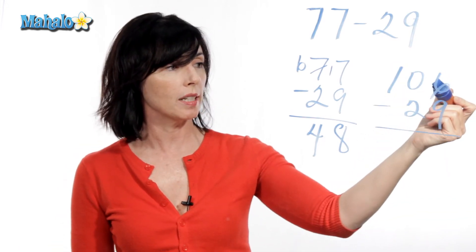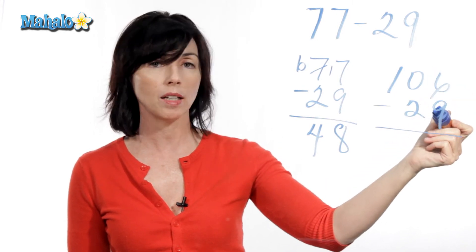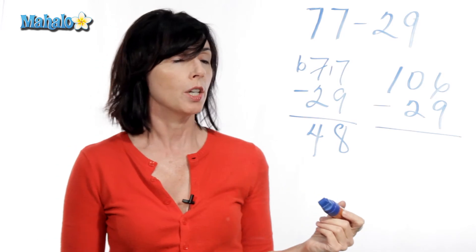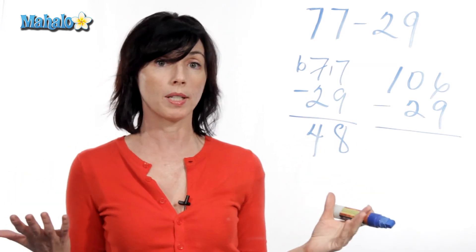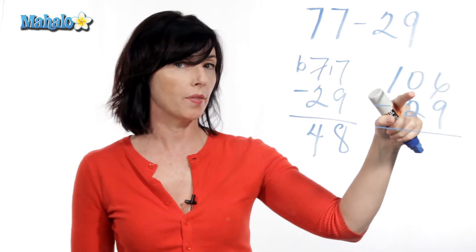So it looks like we're trying to do six minus nine. And since this number is smaller than that number, we're going to borrow again. So we go one column over and see if we can borrow 10. We look here and we don't have anything, we have a zero.